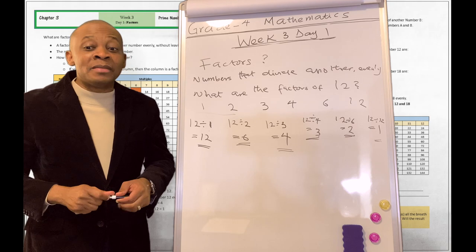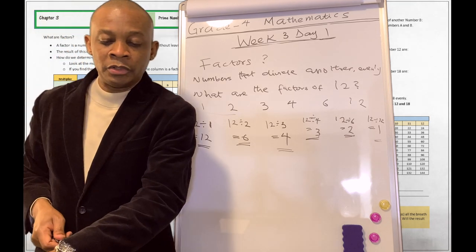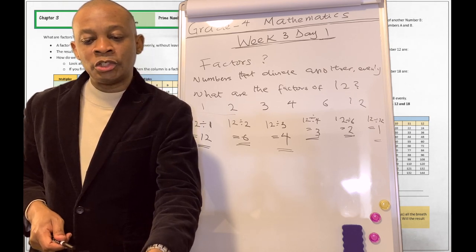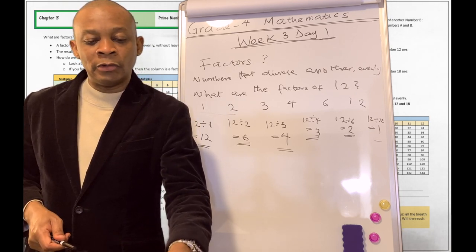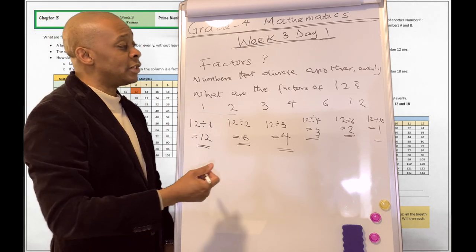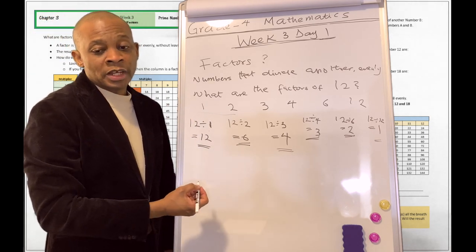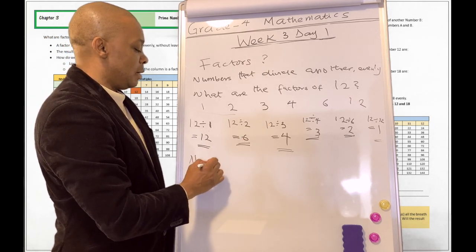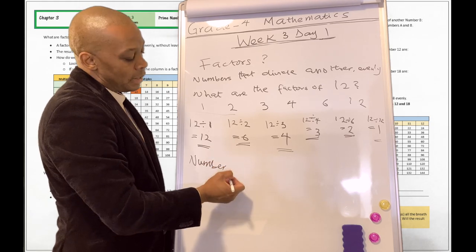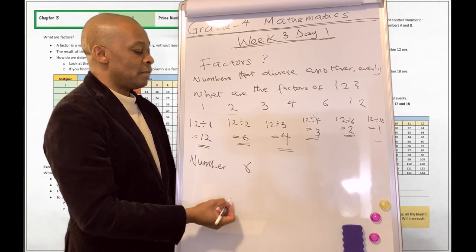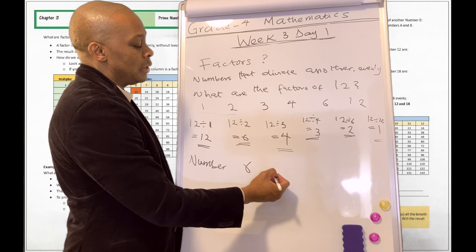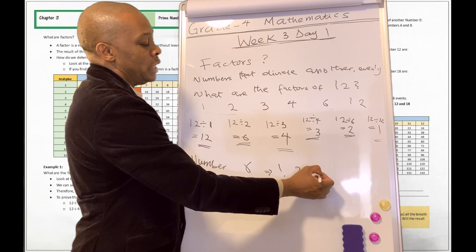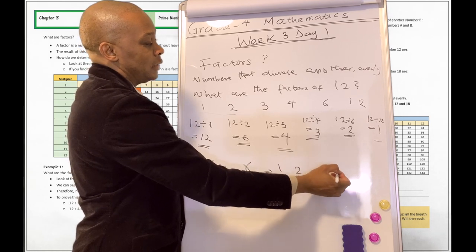Please turn to page number 33 and 34 for additional exercises. We also talked about the concept of common factors. For example, the factors of number six are: one, two, three, and six itself.